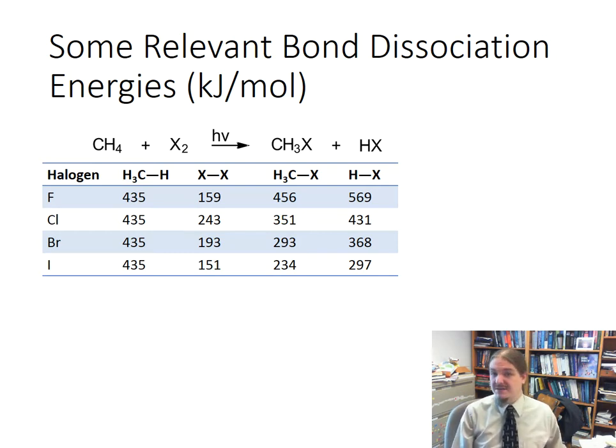Here are some relevant bond dissociation energies for this particular reaction for each of the four halogens. And so the carbon-hydrogen bond in methane is going to be the same in all four cases, but the halogen-halogen bond, the carbon-halogen bond, and the hydrogen-halogen bond vary in strength in kilojoules per mole based on the different halogens.